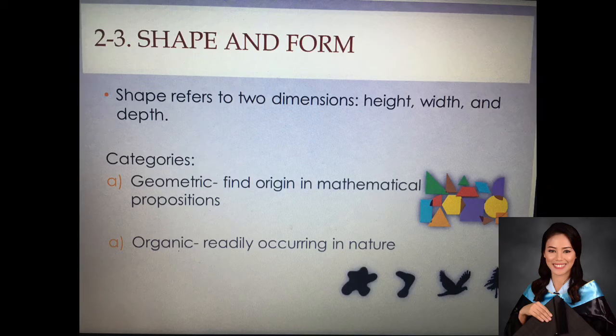The second category is the organic shape. Organic shapes are those readily occurring in nature, often irregular and asymmetrical. Meaning to say, it's not as emphasized or as ideal as parallelograms or pentagons which have ideal corners and ideal forms.